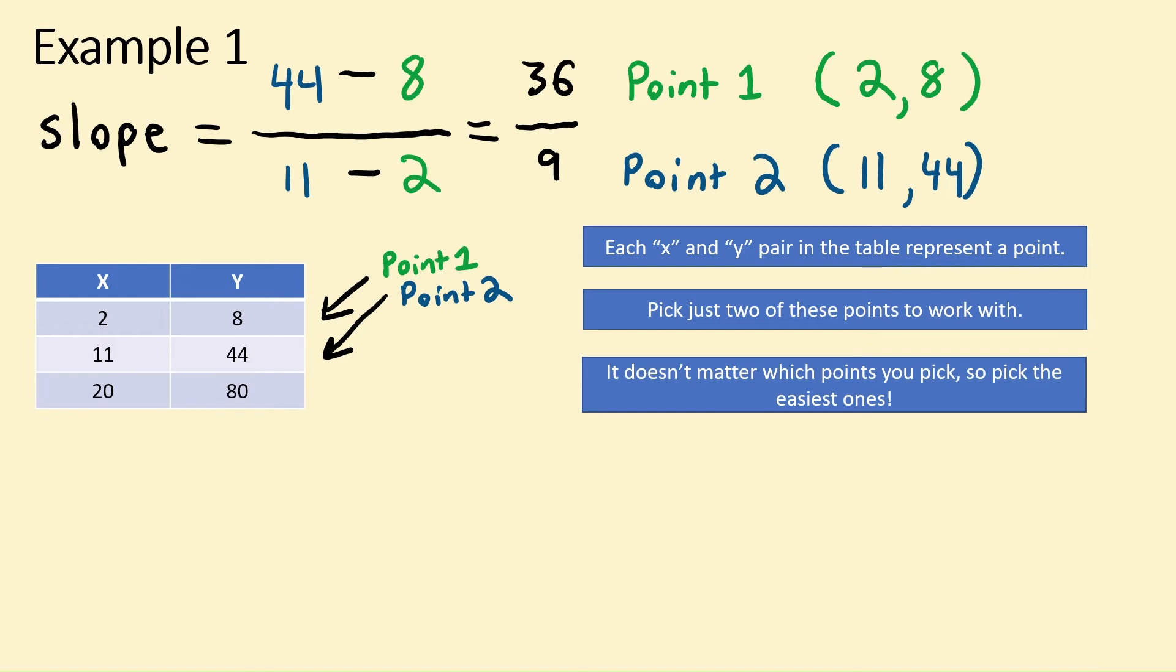Now all we have to do is simplify this fraction. 36 divided by 9 is 4. That's our slope. The final slope of this table is 4. That's how easy it is to find slope from a table.